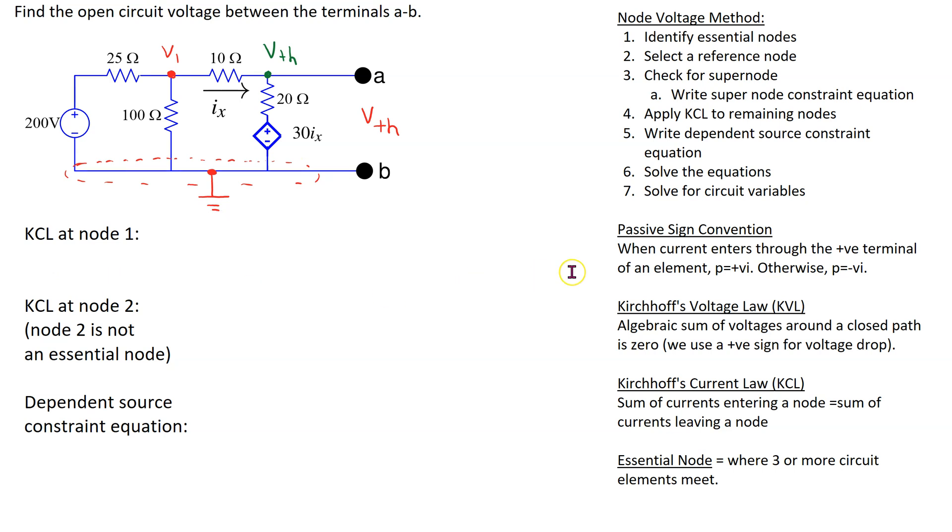First we need to write KCL at node 1. We assume branch currents are flowing away from node 1 and then use Ohm's law to the resistors to write the terms. So this branch current is voltage at this side minus voltage here which is 200 volts because the independent voltage source is directly connected between ground and this point. Thus the first term is V1 minus 200 over 25. This branch current through the 100 Ohm resistor is V1 minus 0 over 100, and this branch current through the 10 Ohm resistor is now V1 minus Vth over 10 and this is equal to 0.